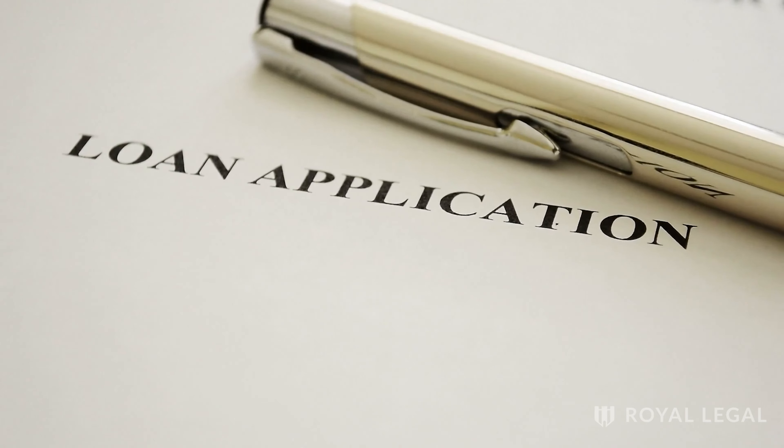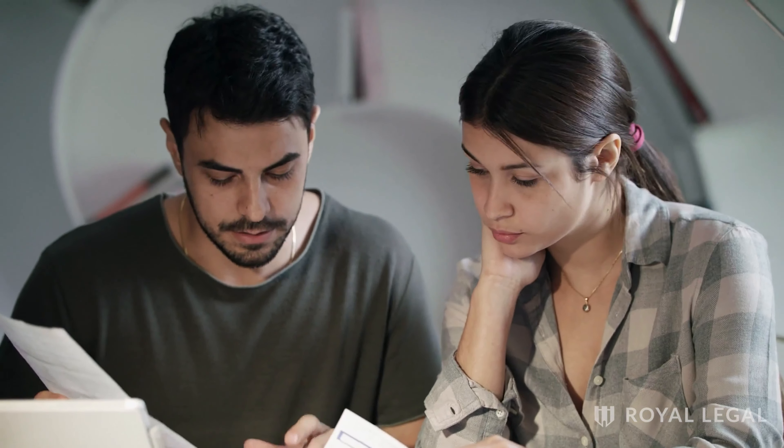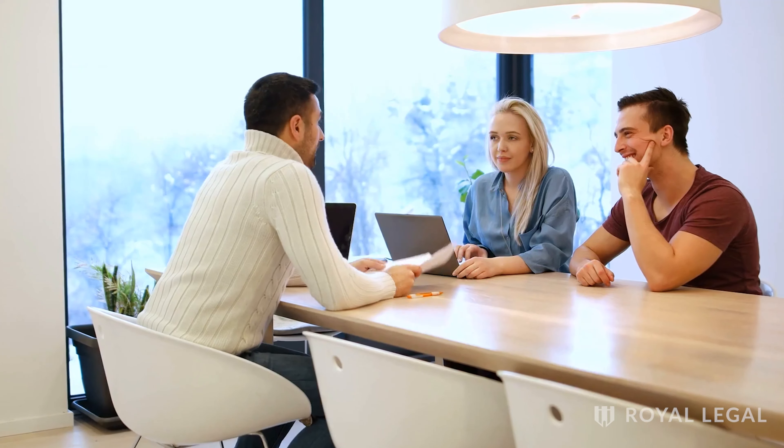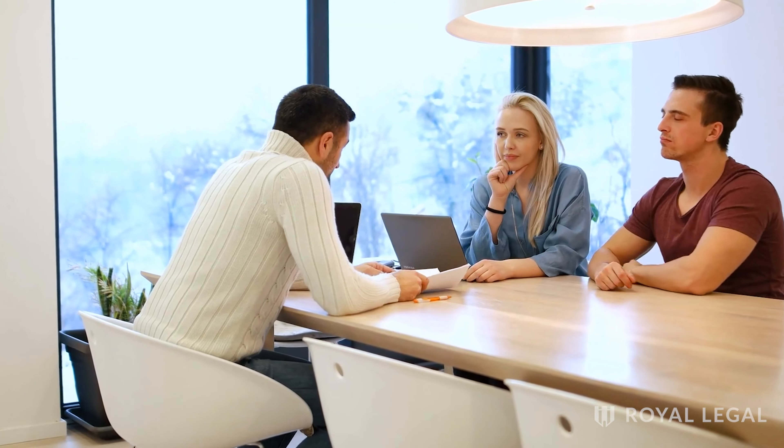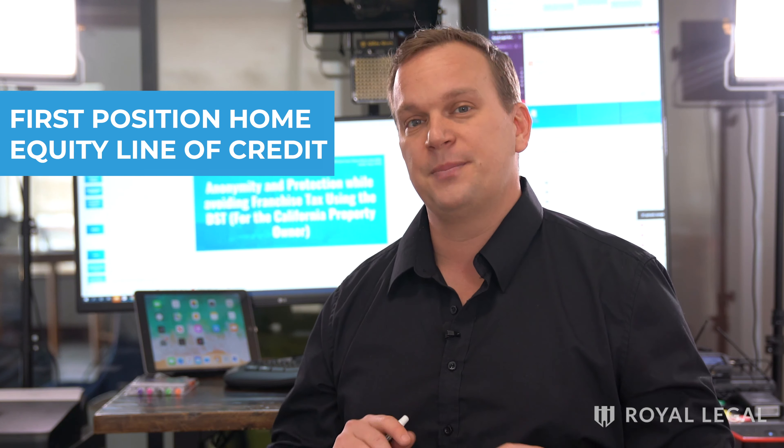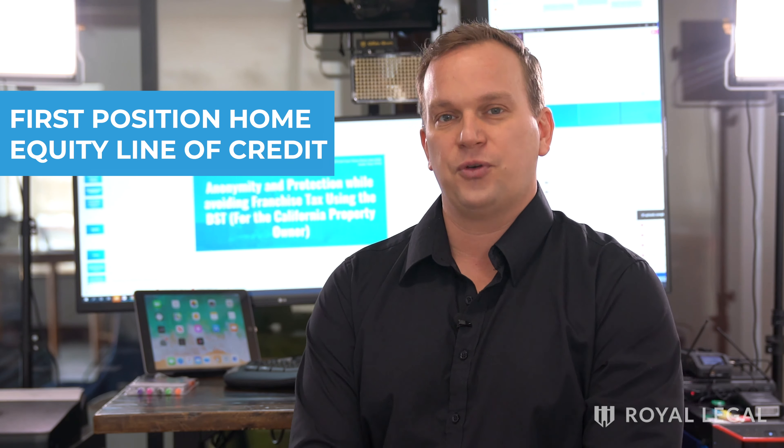If you have a conventional 30-year mortgage, you are losing a ton of money, and all you have to do to dramatically improve your financial future is one very simple trick. It's called a first position home equity line of credit. Let me break it down for you a little bit more about how all of this works.